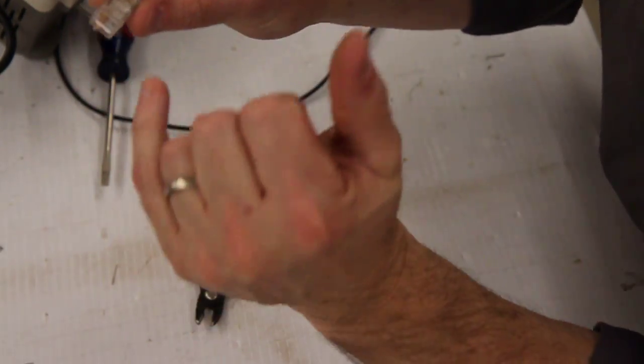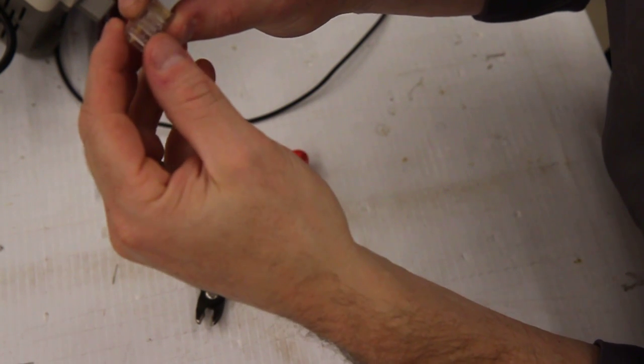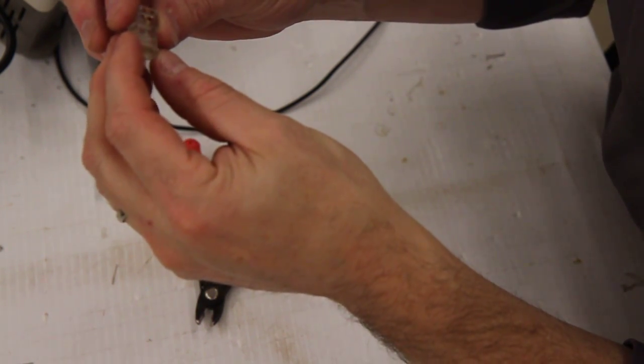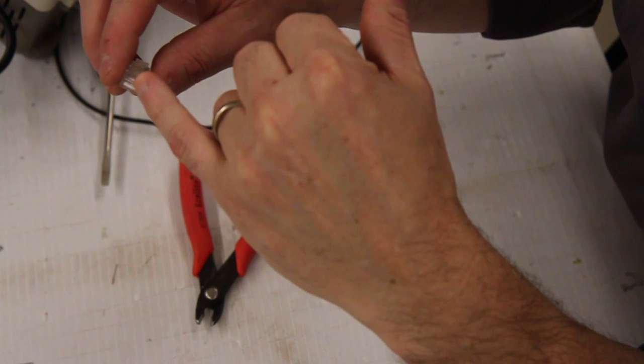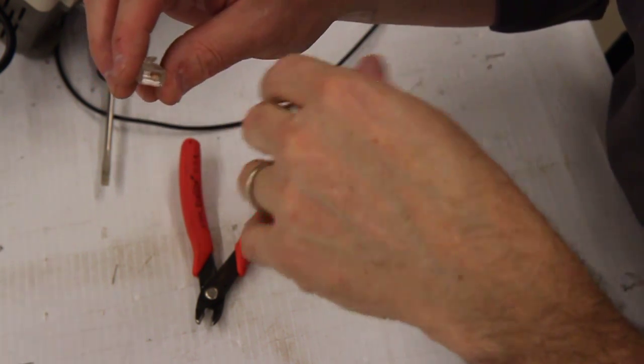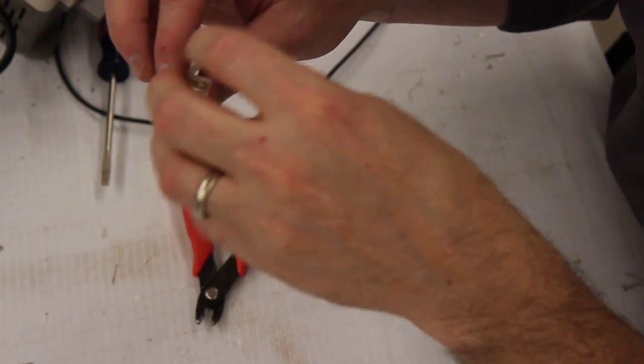And now I have a cat5 terminator. Can plug it in anywhere. And what I often do is just put a little bit of hot glue in the back side of this connector to seal it up.